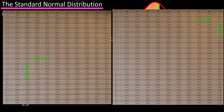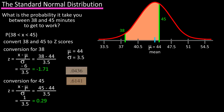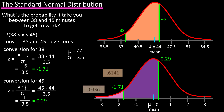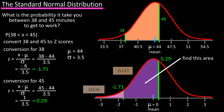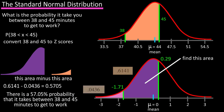Now we need to look up these z-scores in the table. For negative 1.71, we have 0.0436, and for z equals 0.29, the table shows 0.6141. The area to the left of negative 1.71 equals 0.0436, and the area to the left of 0.29 is 0.6141. To find the area between these two z-scores, we subtract: 0.6141 minus 0.0436 equals 0.5705, and that is our probability. So the probability it takes you between 38 and 45 minutes to get to work is 57.05%.